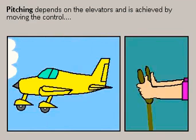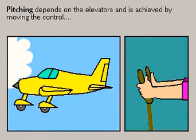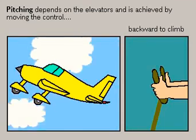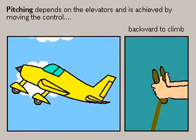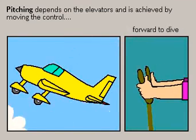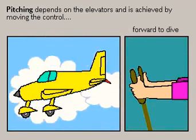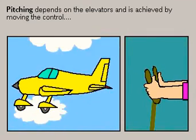The pitch of a plane is its angle of ascent or descent and is controlled by the elevators in the tail. Pushing the control column forward tilts the elevators down, causing the plane to dive.